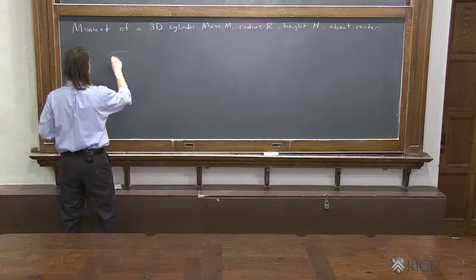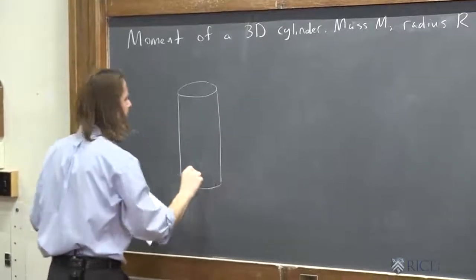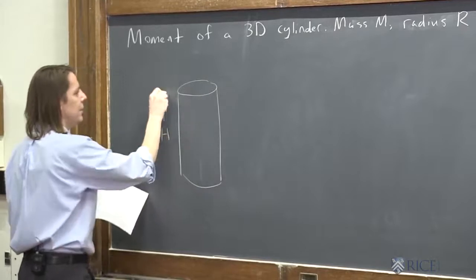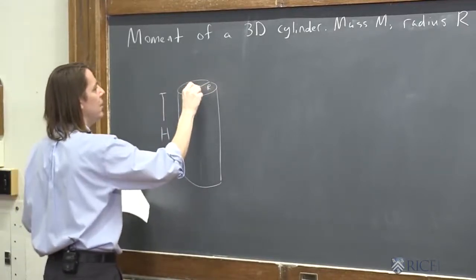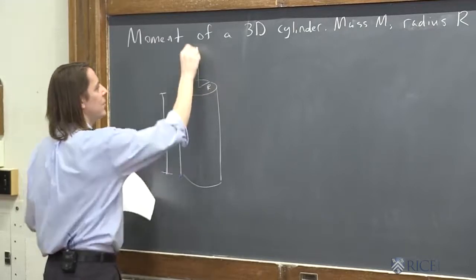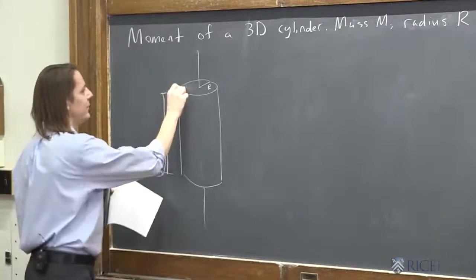So let's draw it real quick. We've got that and it goes down like this. Radius big R and the axis is the center, spinning around its center that way, and it has total mass M.